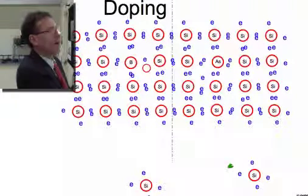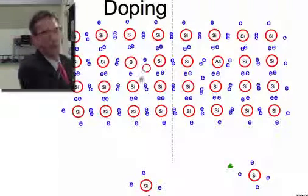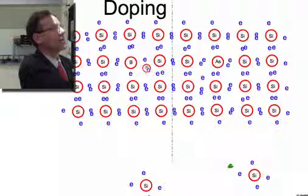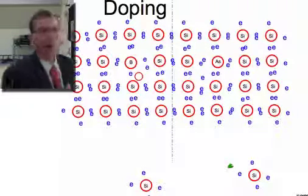The same thing's happening, of course, on this side here. This electron, just because of thermal energy, they're just wandering through the lattice because their thermal energy can move. And now the hole has moved.